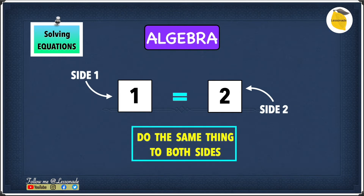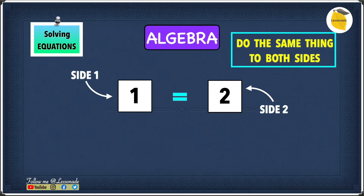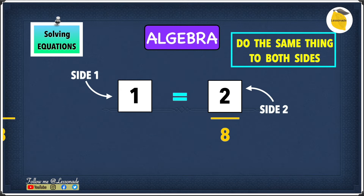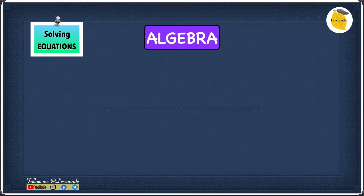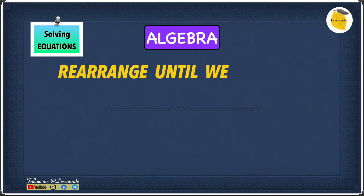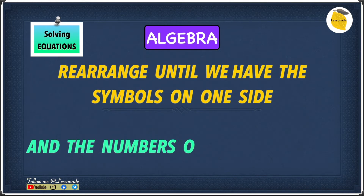To make sure both sides are equal, we need to do the same thing to both sides. So what do we mean by that? If we're going to subtract side 1 by 8, we also have to subtract side 2 by 8. Or if you're going to divide side 2 by 8, you also have to divide side 1 by 8. A way of approaching an equation is by rearranging until we have the symbols on one side and the numbers on the other.